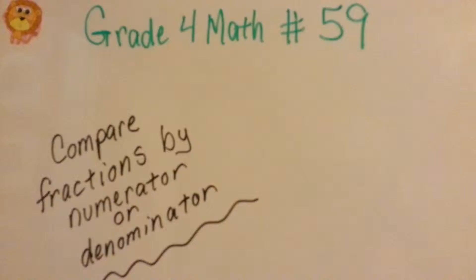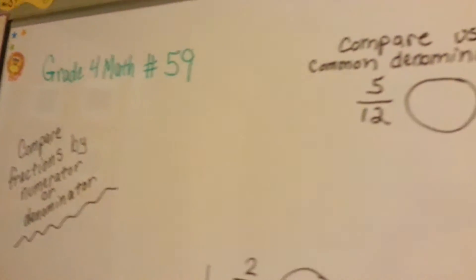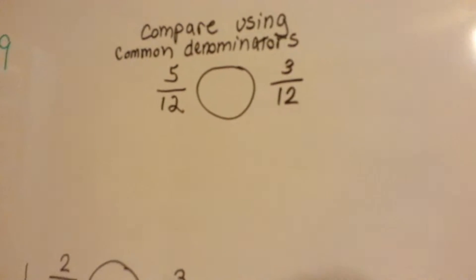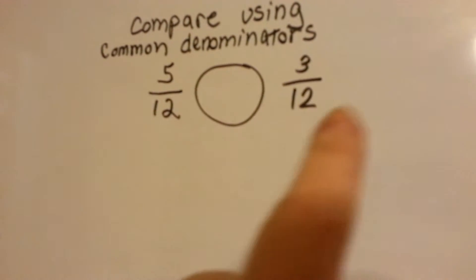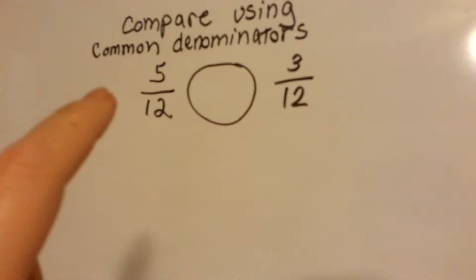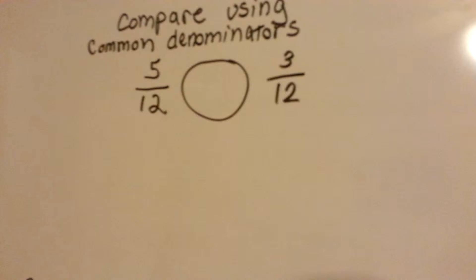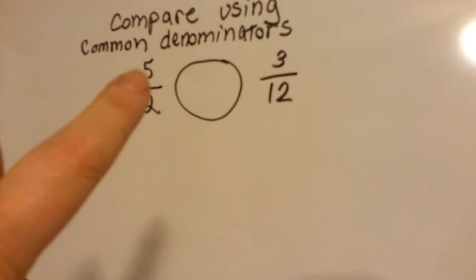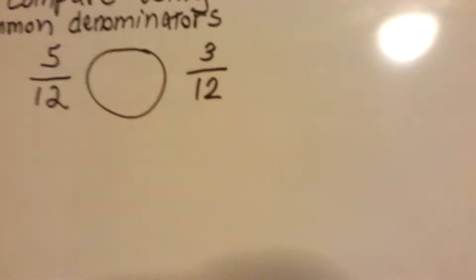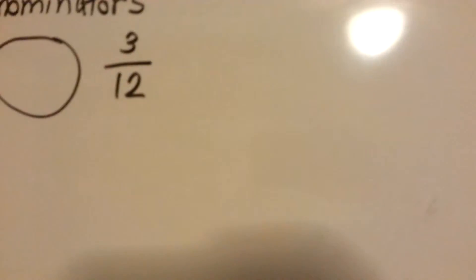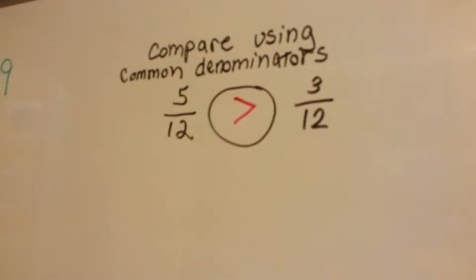We've been talking a lot about fractions lately, and now we're going to continue talking about comparing them. You can compare fractions using common denominators, because if they both are split into 12ths and you've got 3 twelfths or 5 twelfths, well you know 5 is bigger, so 5 twelfths is going to be more than 3 twelfths. So we know right away that 5 twelfths is greater than 3 twelfths.